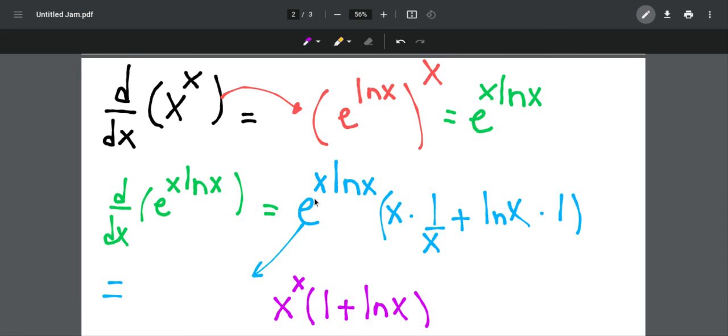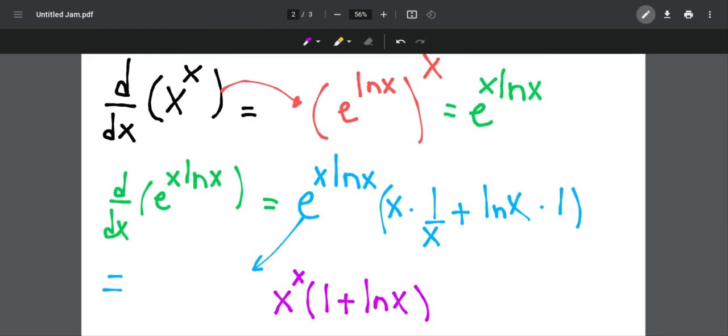Now, if you remember, in the first part of the video, I said that e to the power of x ln x is just x to the power of x. We can substitute it instead of e to the power of x ln x.